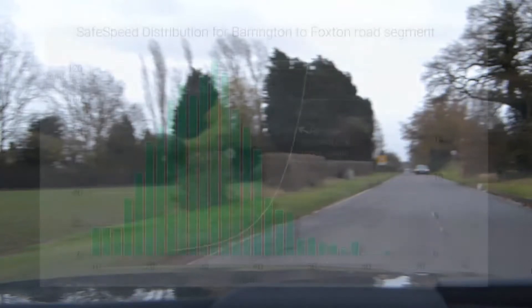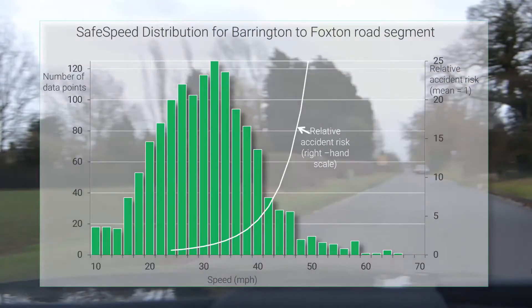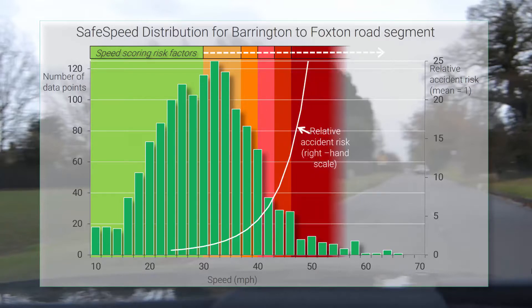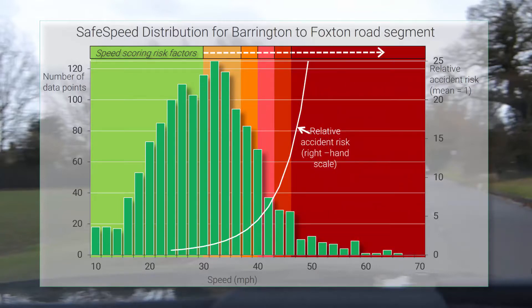So this is how we would score a fleet driver for that short road section. Here's the speed distribution which shows the depth of data we have in the Safe Speed database. We apply no penalty below the mean speed, but then a steady increase in score up to the 75th percentile, followed by a steeper rise in weighting through to the highest score at the 95th percentile. This is far more appropriate than using the 60mph speed limit, as there are virtually no vehicles travelling that fast on this stretch of road.